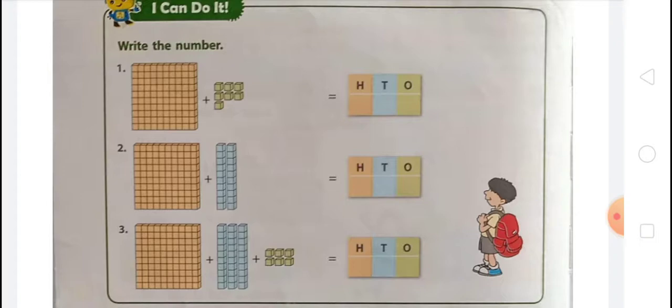Question 3: there is 1 block of 100 small blocks, that is 100, plus 3 blocks of tens, that is 30, and plus 6 single blocks, that is 6. So 100 plus 30 plus 6 equals 136. On the ones place there is 6, on the tens place there is 3, and on the hundreds place there is 1. The number name for 136 is one hundred thirty-six — O-N-E, H-U-N-D-R-E-D, T-H-I-R-T-Y, S-I-X — 136.